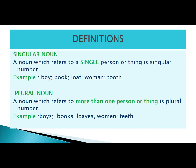Loaf changes into loaves — we change F into V and add ES. Woman changes into women, W-O-M-E-N — a change of spelling. Tooth changes into teeth — T-O-O-T-H changes into T-E-E-T-H. So you have seen that we form plural nouns in different ways: adding S, changing F to V and adding ES, changing vowels as in woman to women, or changing double-O to E-E as in tooth to teeth.